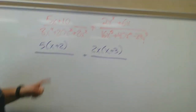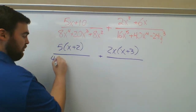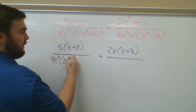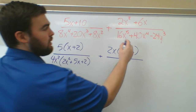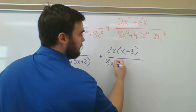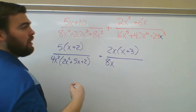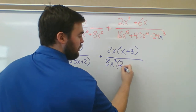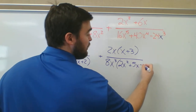Now the denominator. Each term has a factor of 4, and I can also factor out x squared, giving 4x squared times (2x squared plus 5x plus 2). Over here, similarly, I can factor out 8x to the third, and I'm left over with 2x squared plus 5x minus 3.